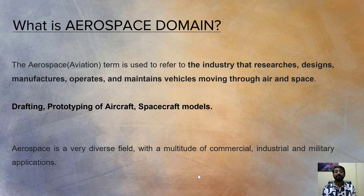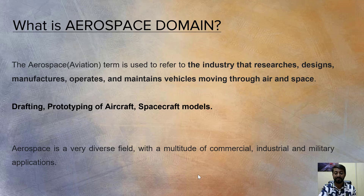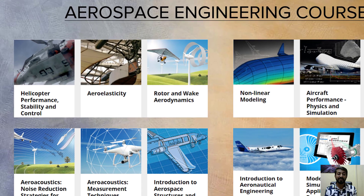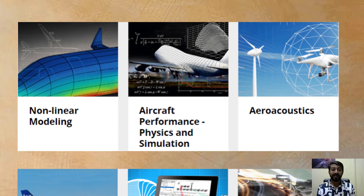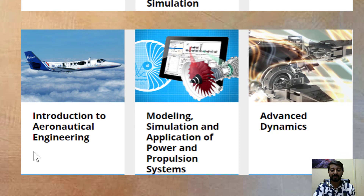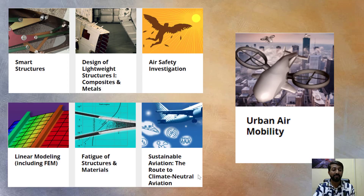The first domain is aerospace. Most people learning CATIA use it majorly for surface modeling, which is required in automobile and aerospace industries. Aerospace widely refers to the industry that researches, designs, manufactures, operates, and maintains vehicles moving through air or space. The process involves drafting and prototyping of aircraft and spacecraft models. It is a very diversified field with commercial, industrial, and military applications. Sub-domains include helicopter design, aeroelasticity, nonlinear modeling, aircraft performance, aeronautical engineering, advanced dynamics, smart structures, air safety investigation, fatigue and structural material analysis, and urban air mobility.